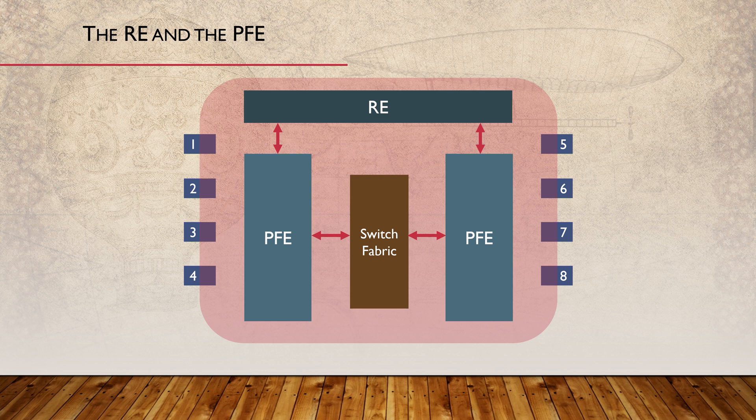You might be familiar with the term supervisor, as used by other vendors. This is roughly the same thing as the routing engine. Larger devices will have two routing engines for backup, as well as to support in-service software upgrade. This is a way of updating Junos without impacting traffic flow. There's more on this in the study notes if you're interested.